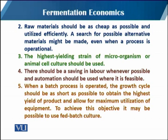The raw material should be as cheap as possible. When we talked about media formulation, we discussed different materials, and one criterion is that they should be cheaper. The third objective is that the highest yielding strain of the microorganism or animal cell culture should be used — this was also a key criteria when we talked about the selection of the organism.